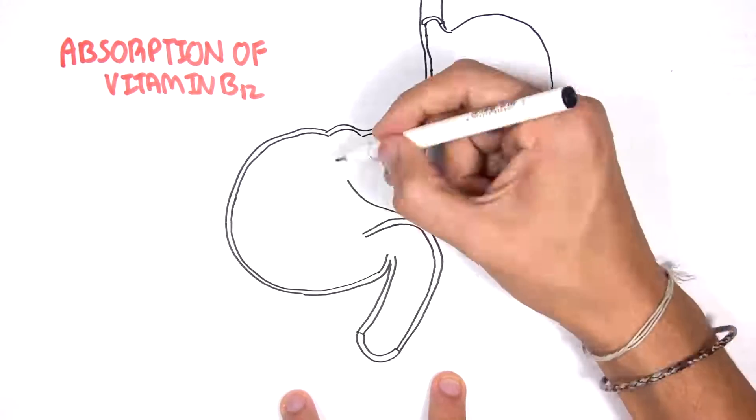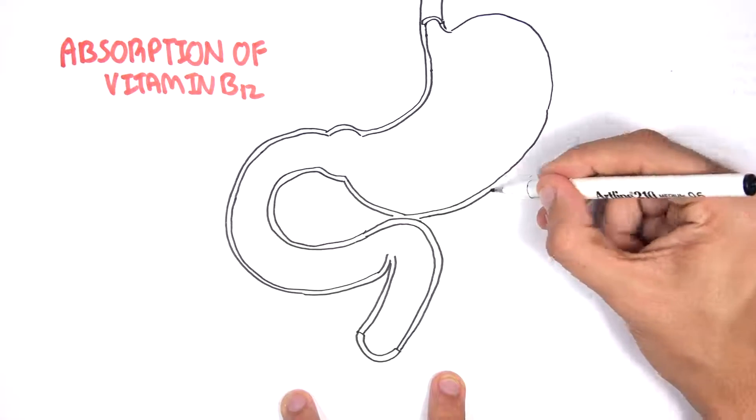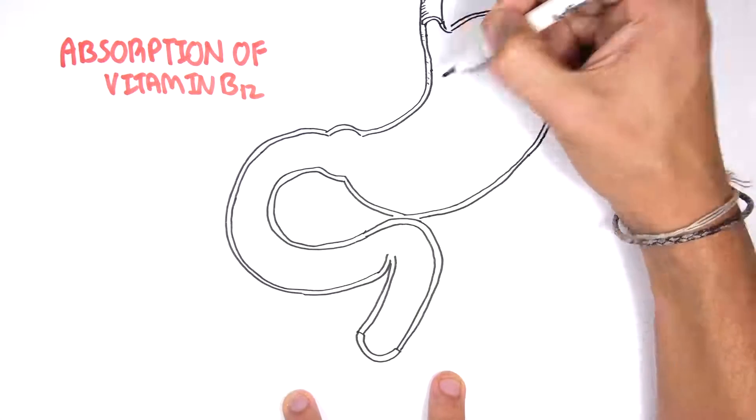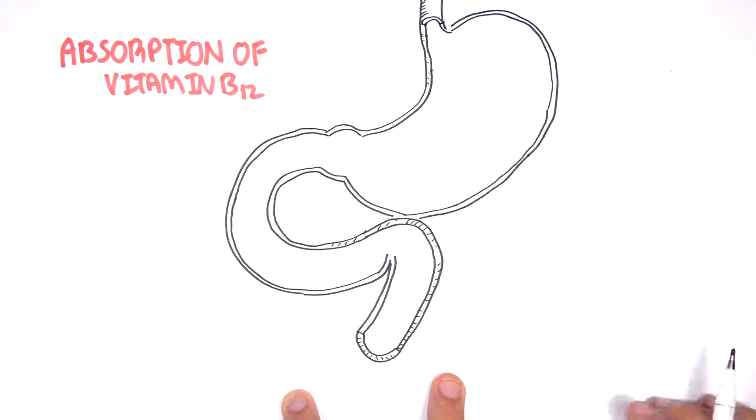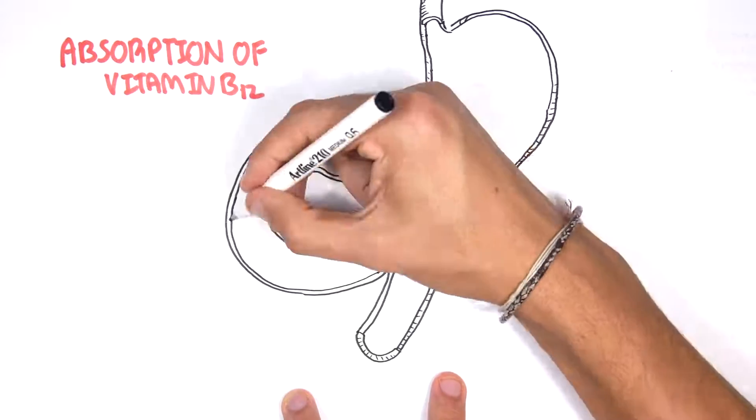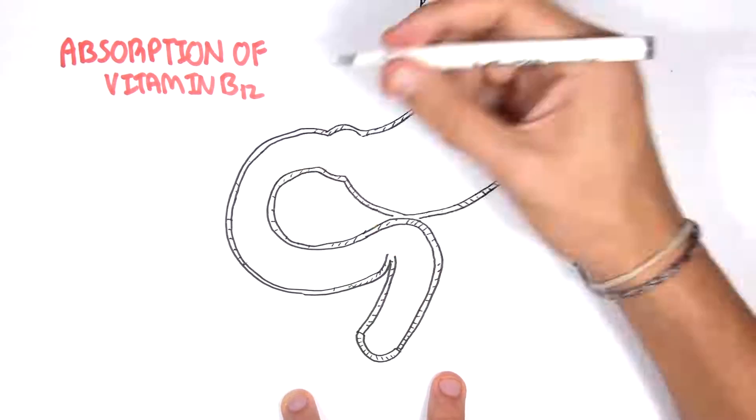So in this video, we're going to look at vitamin B12 absorption, and we begin by drawing here the stomach and the small intestine. Here is the duodenum of the small intestine.